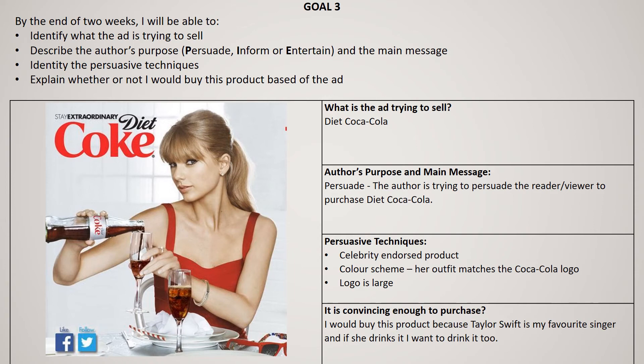We can see the Diet Coke, and 'Coke' is in red writing which also matches her dress — so even the color scheme in this ad is very well thought out. We can also see the red sunglasses and the red and white straw. The color scheme is very well thought of, and the logo is large — 'Coke' is written in the largest font out of all the writing.